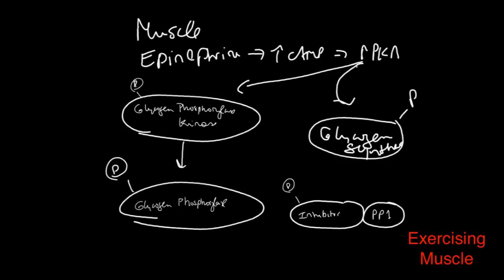All right, the muscle's slightly different. The muscle does not respond to glucagon. The hormonal stimulus is epinephrine. It does the same thing. It binds to its receptor, activates the G-coupled proteins, and increases cyclic AMP.